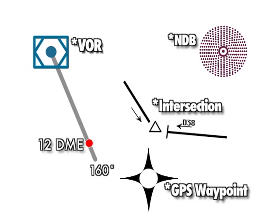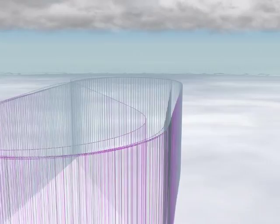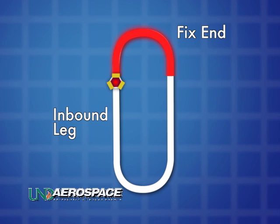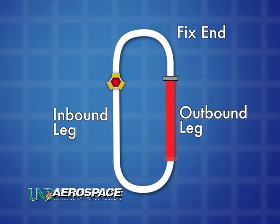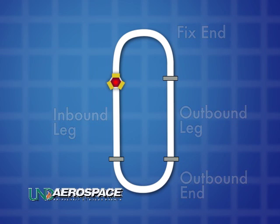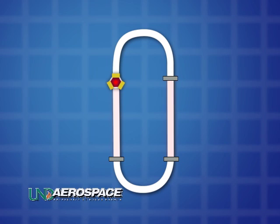The racetrack portion of the pattern is made up of four components: the inbound leg, fix end, outbound leg, and outbound end. Under zero wind conditions, the two legs are exactly parallel and the pattern ends connect the legs via a 180-degree turn.